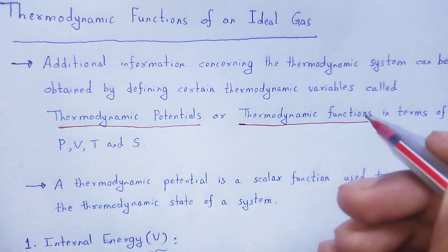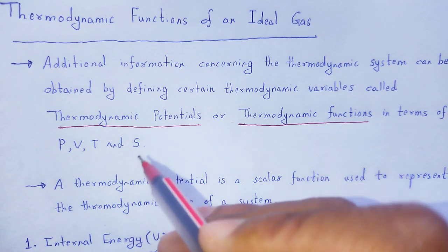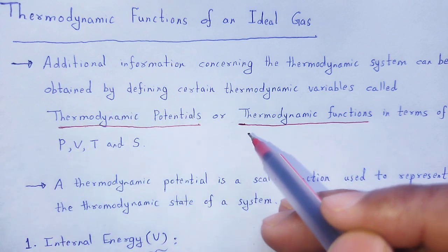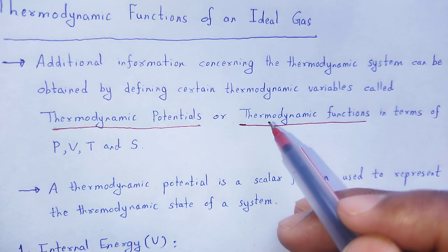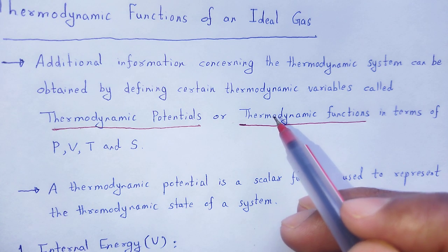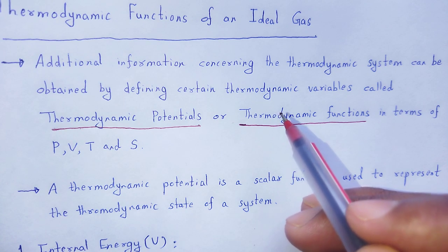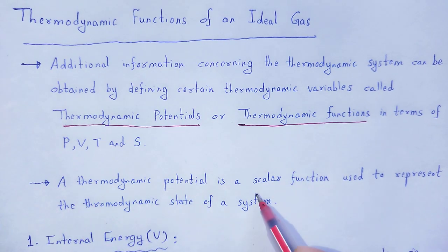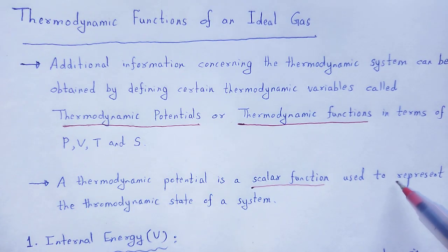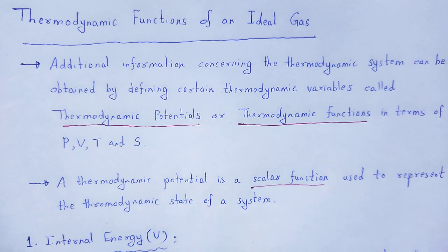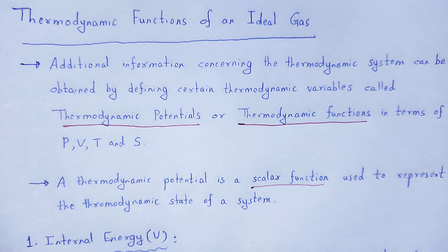These thermodynamic variables are expressed in terms of pressure, volume, temperature, and entropy. By knowing these thermodynamic potentials or thermodynamic functions, we can easily describe various thermodynamic properties of a given system. Now we discuss what are the thermodynamic functions and what is the importance of these thermodynamic functions to understand the properties of a particular thermodynamic system.